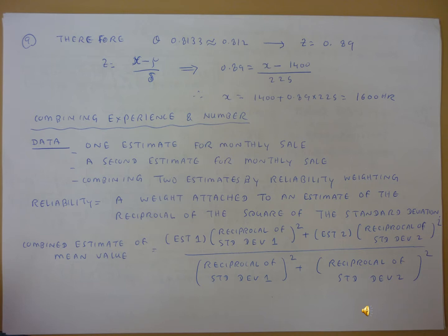In this case, we have to calculate the combined value, the mean value. So estimate one multiplied by reciprocal of standard deviation one square, plus estimate two multiplied by reciprocal of standard deviation two square. That would be the combined expected value, the mean value.